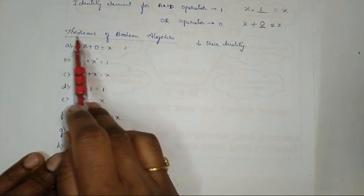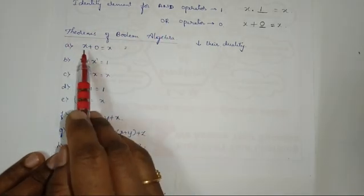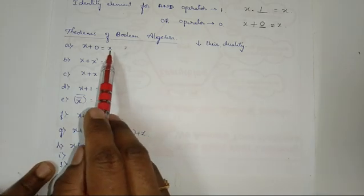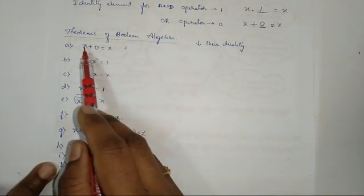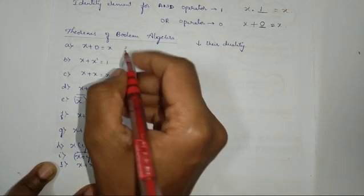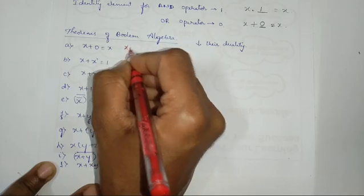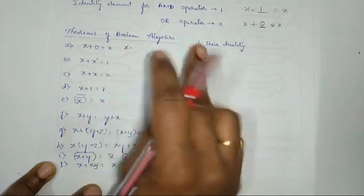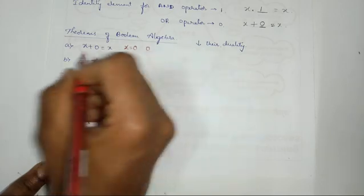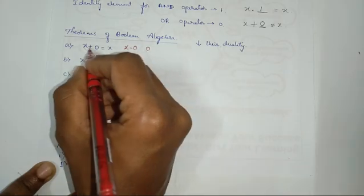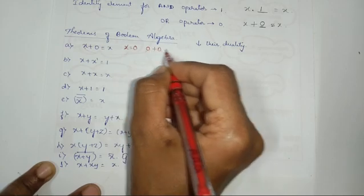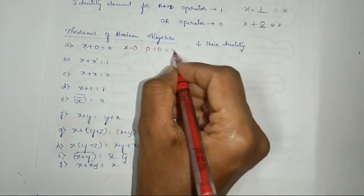In the last video we were discussing about the theorems of Boolean algebra. The first theorem says x plus 0 is equal to x. Many students struggle to remember this. In binary we have only two values, so let me take x equal to 0. When x is 0, I write 0 plus 0. What is 0 OR with 0? We know from basic gates: 0 OR 0 is 0.